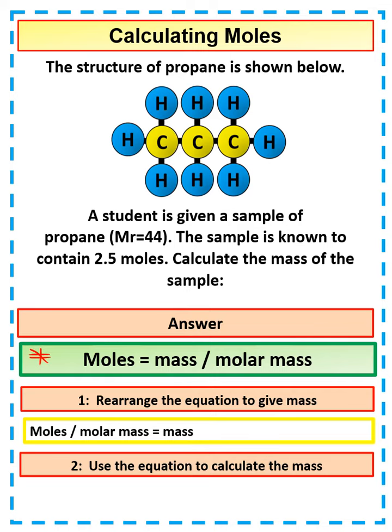And all we now need to do is plug the numbers in. So we're going to have the 2.5 from there and the 44 from there. So all we're doing is 2.5 divided by 44, which will give us 0.057 moles.